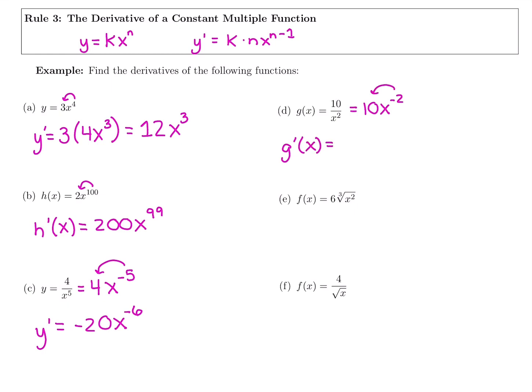And subtract one for the new power for this. So I'm going to bring down that negative 2 times 10 is negative 20, and then negative 2 minus 1 is negative 3. Bring down the power, subtract one for the new power.